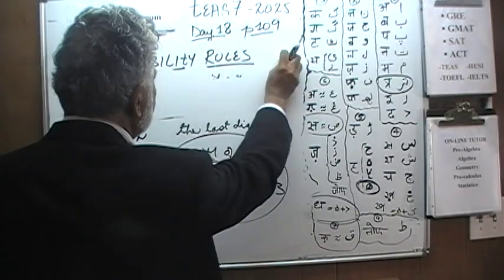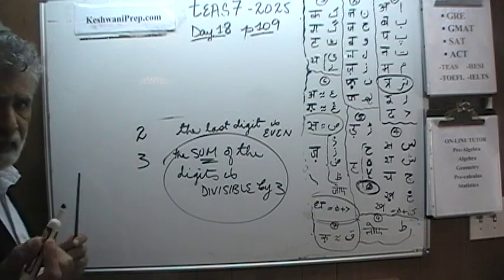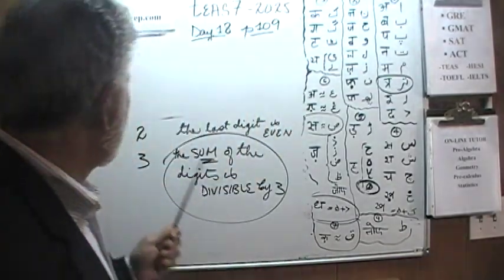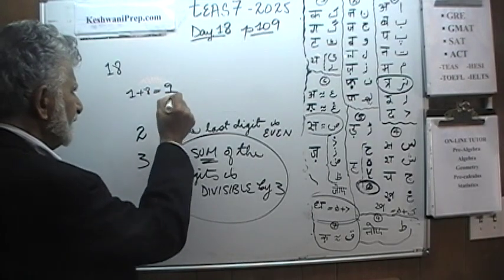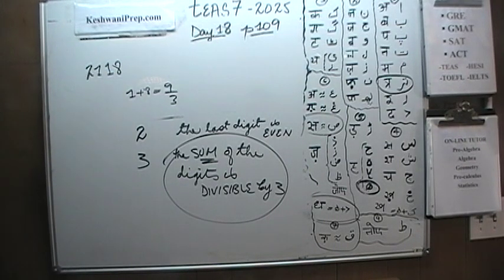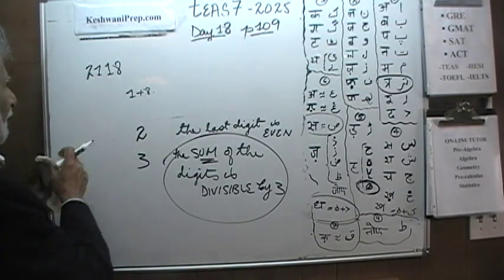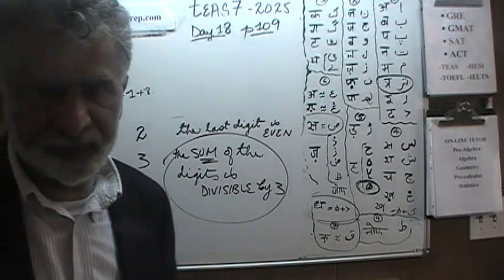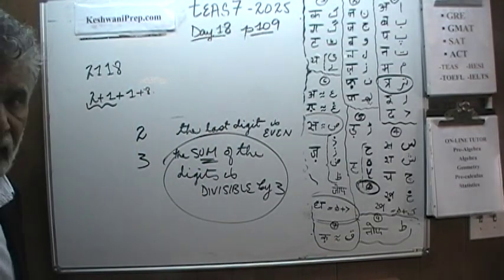Let's take a look at an example. How about 18 — is 18 divisible by three? Of course we know it is. The rule says: add up the digits. One plus eight is nine, and nine is divisible by three, so 18 is divisible by three. How about 2,118? All we do is add two plus one plus one plus eight, which equals twelve, and twelve is divisible by three. So we can tell right away that 2,118 is divisible by three.